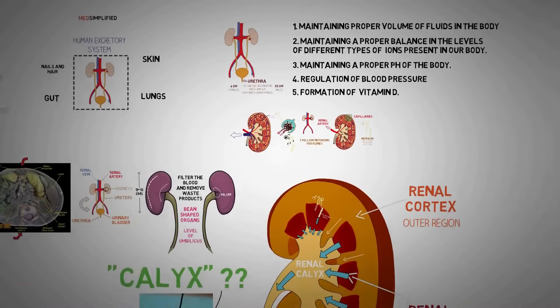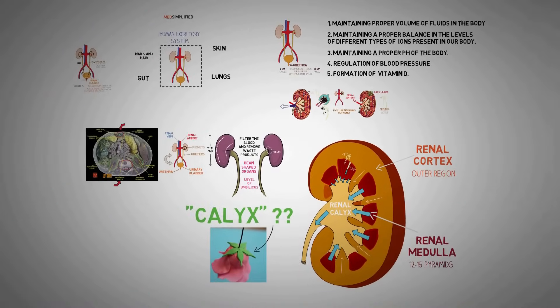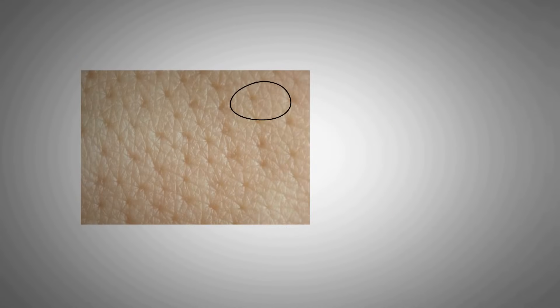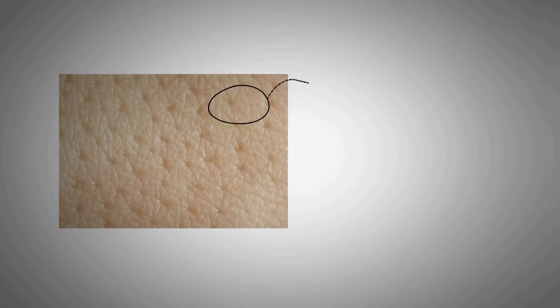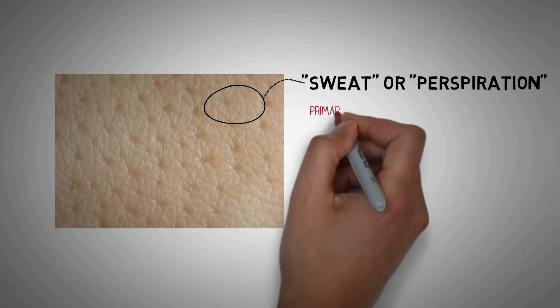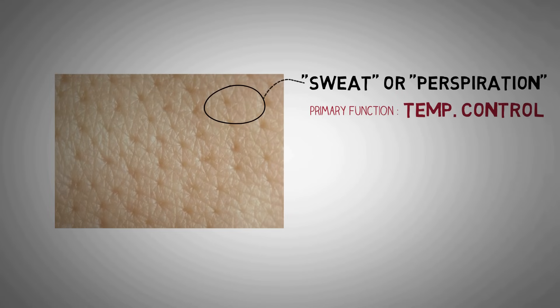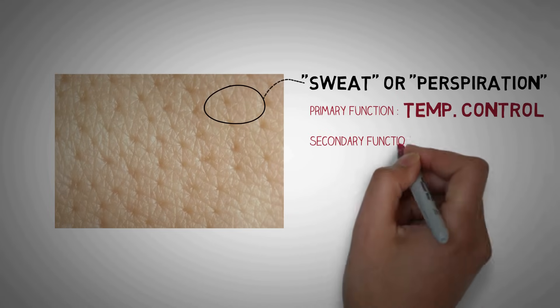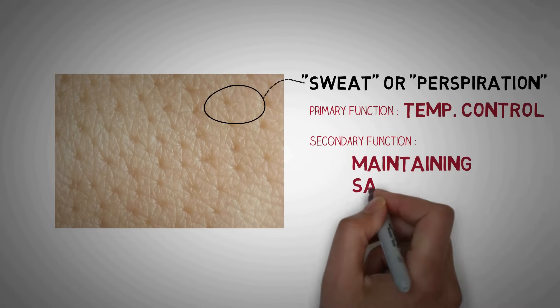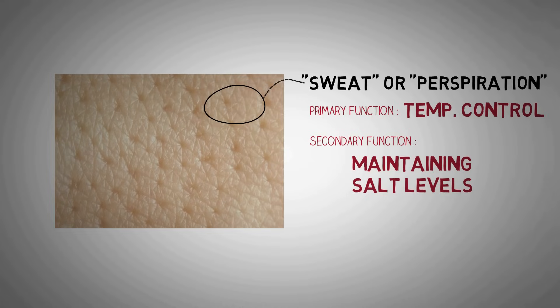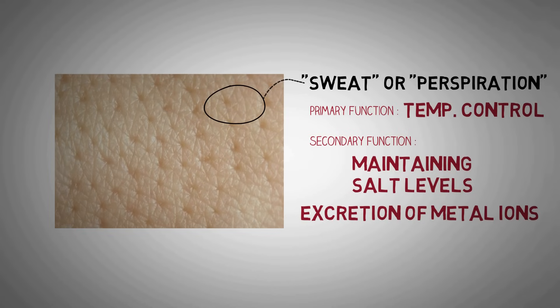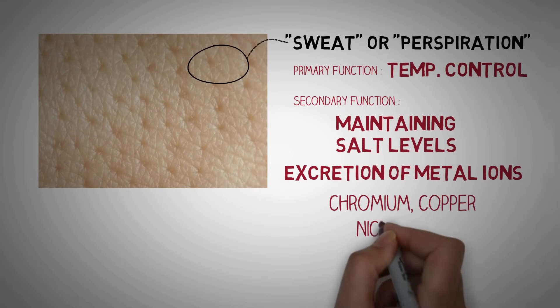Now let's talk about the rest of the organs included in the human excretory system. The first is your skin — sweat glands in the skin secrete a fluid waste called sweat or perspiration. However, its primary function is temperature control and pheromone release, so its role as part of the excretory system is minimal. Sweating also maintains salt levels in the body. Sweat is mostly water with trace amounts of minerals, lactic acid, and urea, as well as trace elements like chromium, copper, nickel, zinc, and lead.